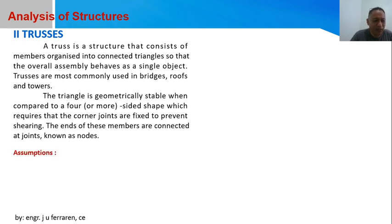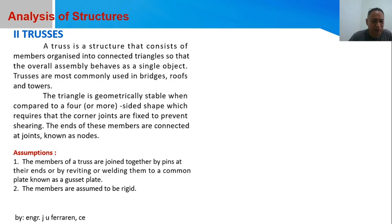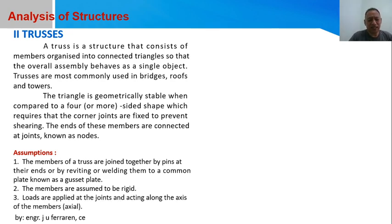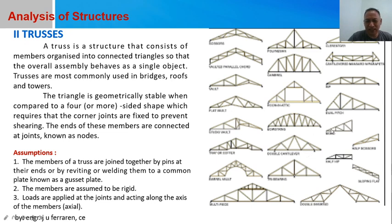The members of the truss are joined together by pins at their ends, or by riveting or welding them to a common plate known as a gusset plate. The members are assumed to be rigid. Loads are applied at the joints and act along the axis of the members, so the forces along the members are axial loads — which can be either tension or compression.